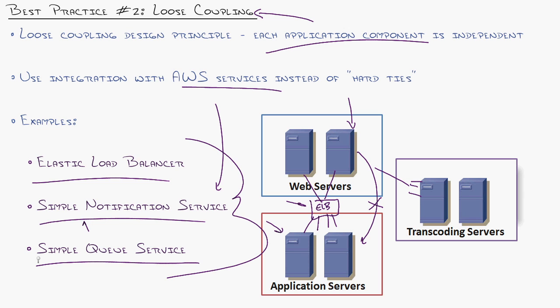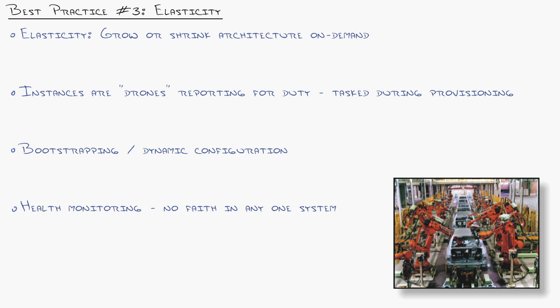In addition, using a service like the simple queue service might even save you a server. Normally, you would have to provision your own server or service within a server to store messages as they're waiting to be processed for, say, like by a transcoding server. Instead, you can rely on a redundant AWS service and eliminate a server and a function altogether from your infrastructure that you have to maintain.